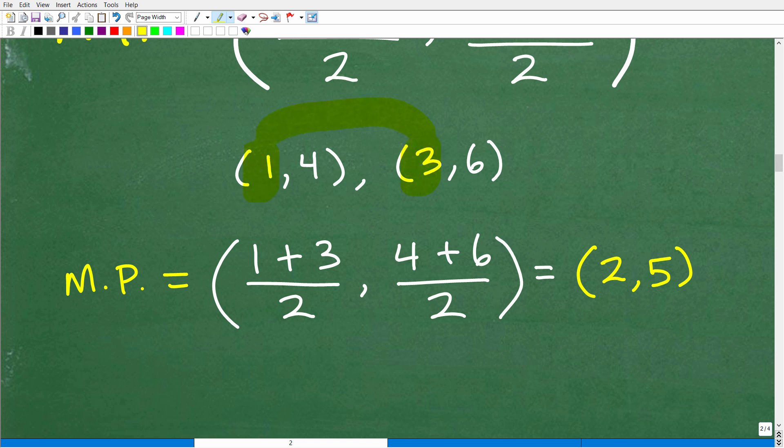So we're going to go ahead and add the x's up first. So that would be 1 plus 3. And we're going to divide that by 2. And then we're going to add up the y's. That would be 4 plus 6 and divide it by 2. So let's go ahead and do this here. So 1 plus 3 is what? That's 4. So 1 plus 3 is 4.